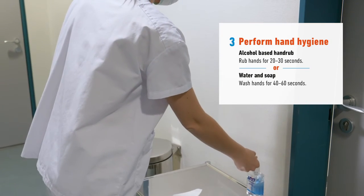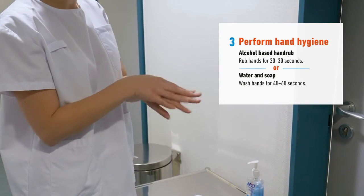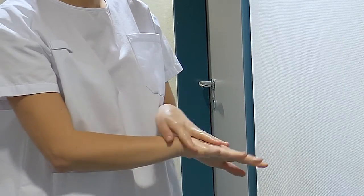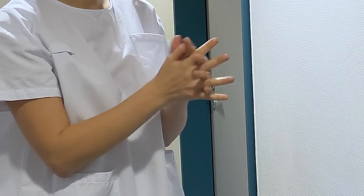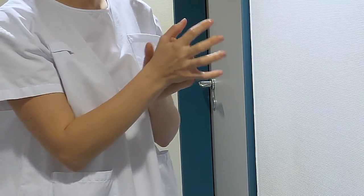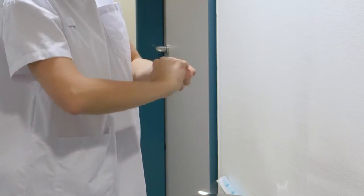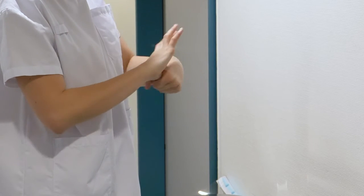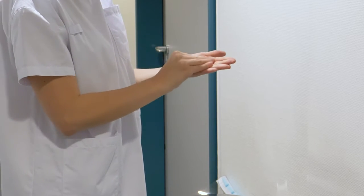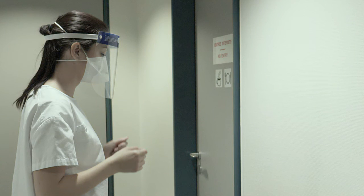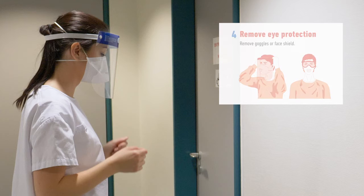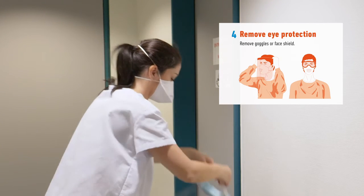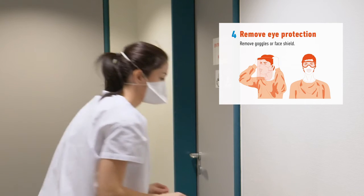Next, perform hand hygiene with alcohol-based hand rub for 20 seconds before touching your face to remove the eye protection. Remove the eye protection by leaning forward and pulling it away from your face. Ensure you clean the goggles or face shield if they are reusable and place them in a clean container.